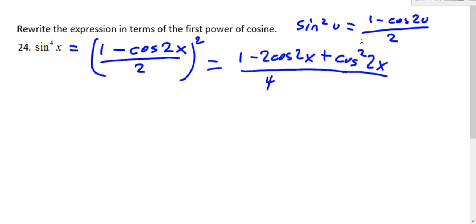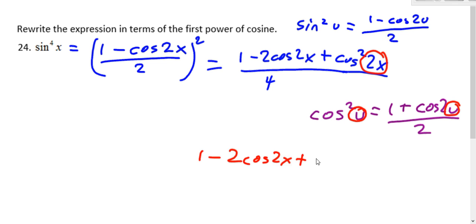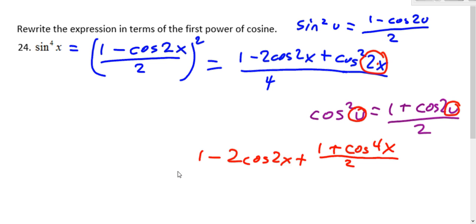And now we have cosine squared. We're trying to get to a regular cosine, so now we need to use the cosine power reducing formula, which is pretty similar. The tricky part is remembering that this u in the problem is actually a two x, so it's going to be two times two x. So it's one minus two cosine two x plus, now we do our substitution with our power reducing formula: one plus cosine — remember u is two x, so we replace it with two x there. Two times two x is four x.